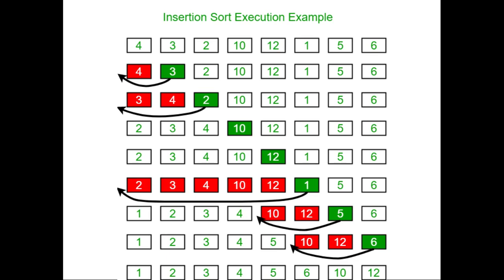One more example: 4 is considered the sorted list, the rest are unsorted. 3 is lesser than 4, so 3 will be moved to the front. Next, 2 is lesser, so 2 will be moved to the front. Then 10 and 12 are each in the correct position. Then we take 1 — it is lesser than 12, so 12 will be moved, 10 will be moved, 4 will be moved, and 1 will be placed at the 0th index of the array.